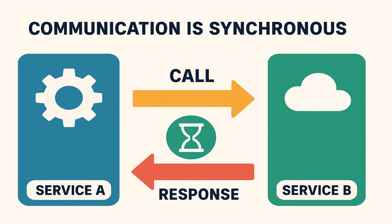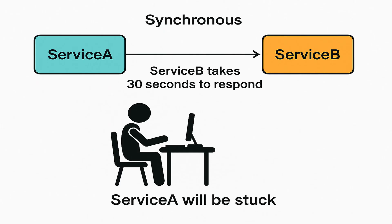Communication is synchronous if service A calls service B and service A keeps waiting until service B returns the response. It's a blocking type of communication. If service B takes 30 seconds to respond, the caller thread of service A will not be able to perform any other operation and will be stuck.